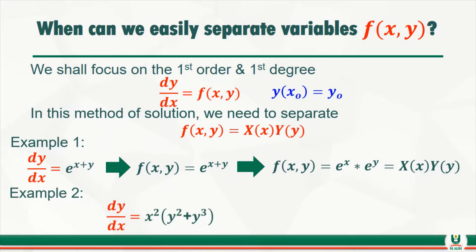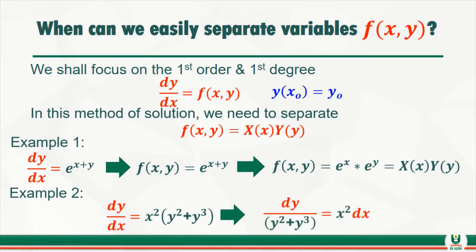Let's consider another example: dy/dx = x²(y² + y³). Can we easily separate the variables? Yes. Notice that y² + y³ are already together and x² is already together, so this is straightforward. All you need to do is divide both sides by (y² + y³) and multiply both sides by dx. We have been able to separate the variables — everything with y is on one side and everything with x is on the other side.